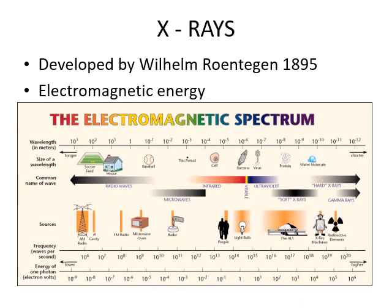X-rays are a form of electromagnetic energy. They have smaller wavelengths compared to something like regular visible light rays. They're up at the higher end where they're a lot smaller little rays, and they can penetrate through material.